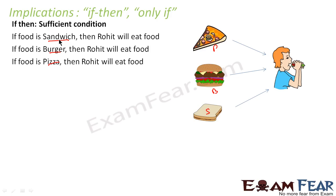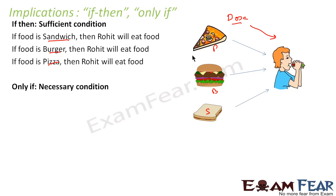If the food is sandwich, he'll eat. If the food is burger, he'll eat. If the food is pizza, he'll eat. They are just a sufficient condition, not a necessary condition. It may be that the food is dosa — then also this guy will eat. So pizza, burger, and sandwich are sufficient conditions but not necessary conditions.